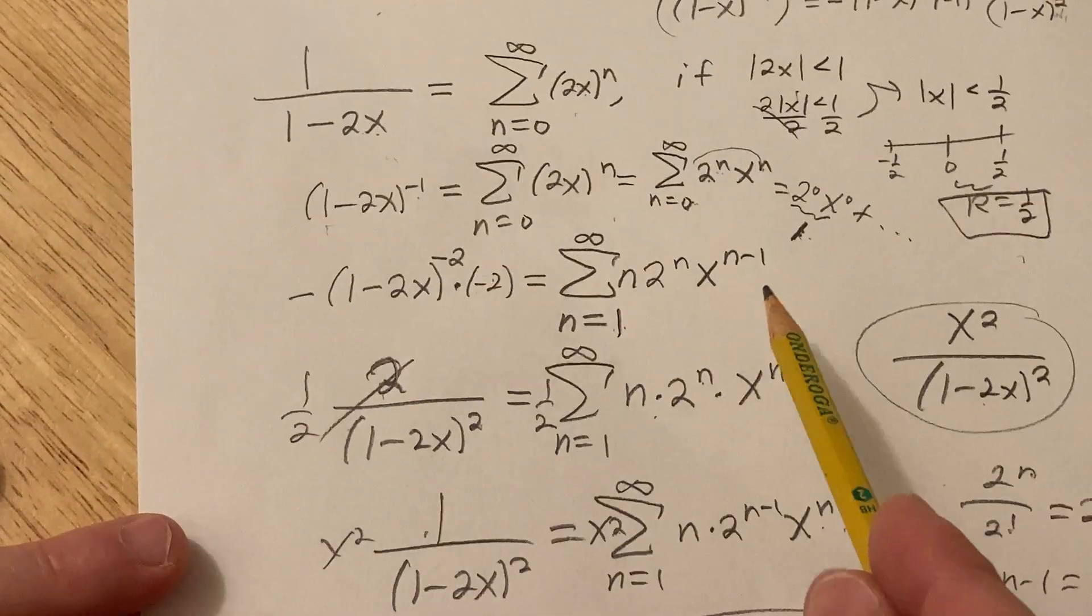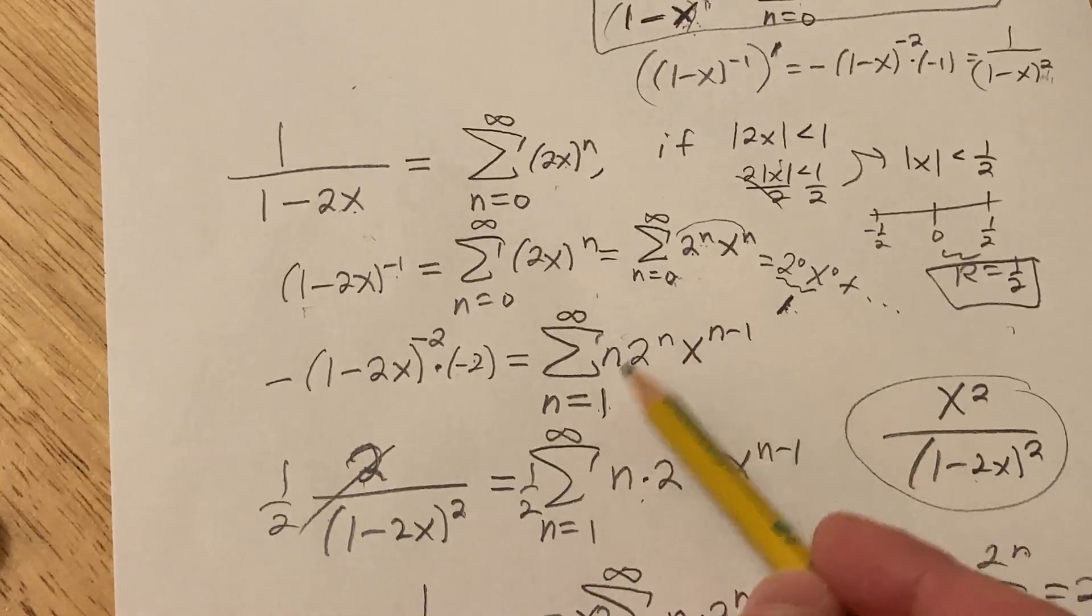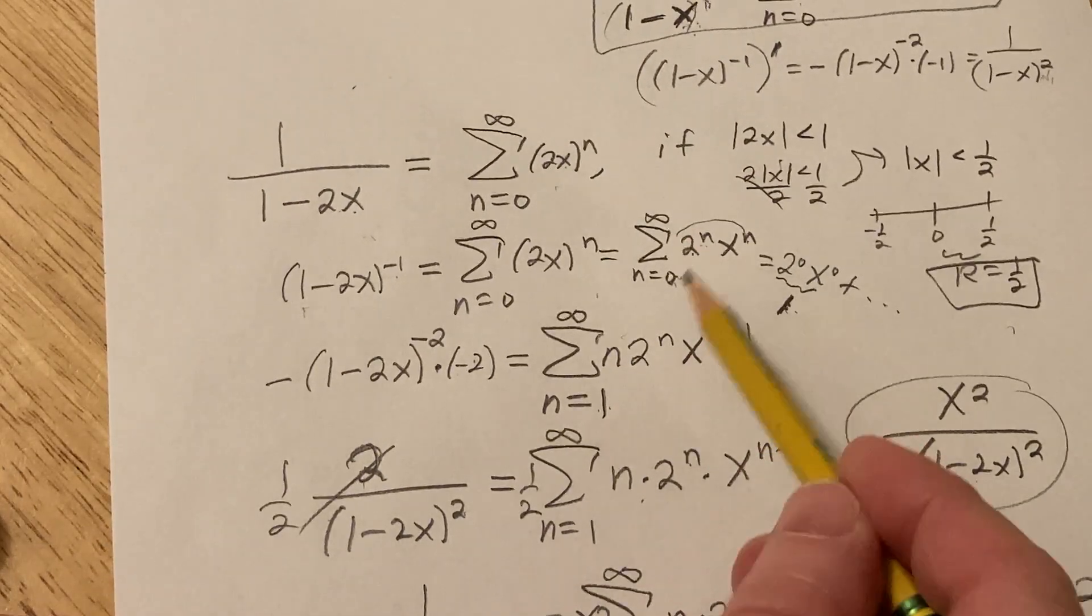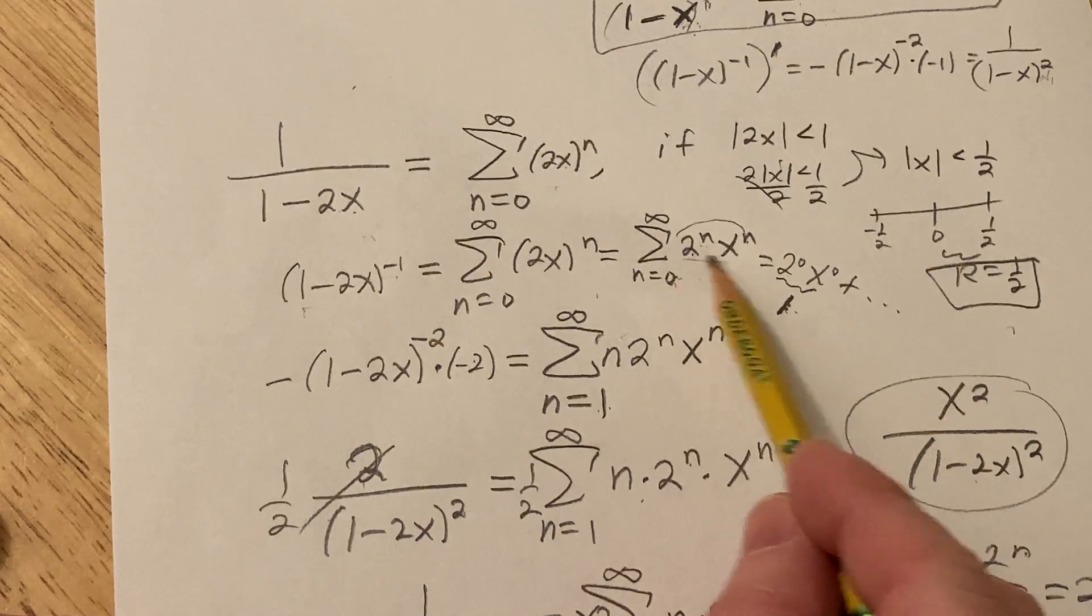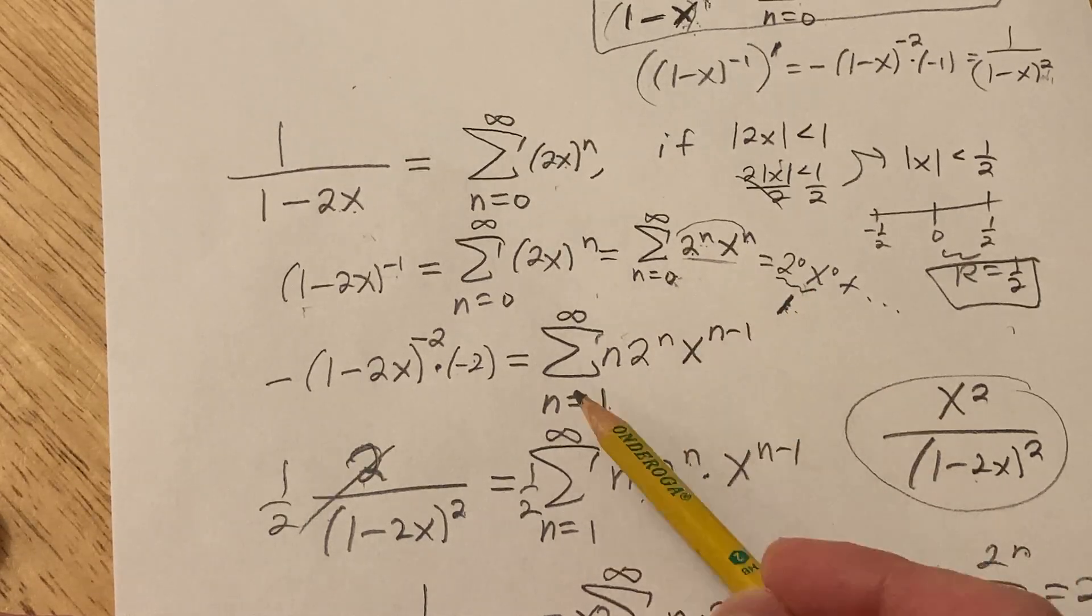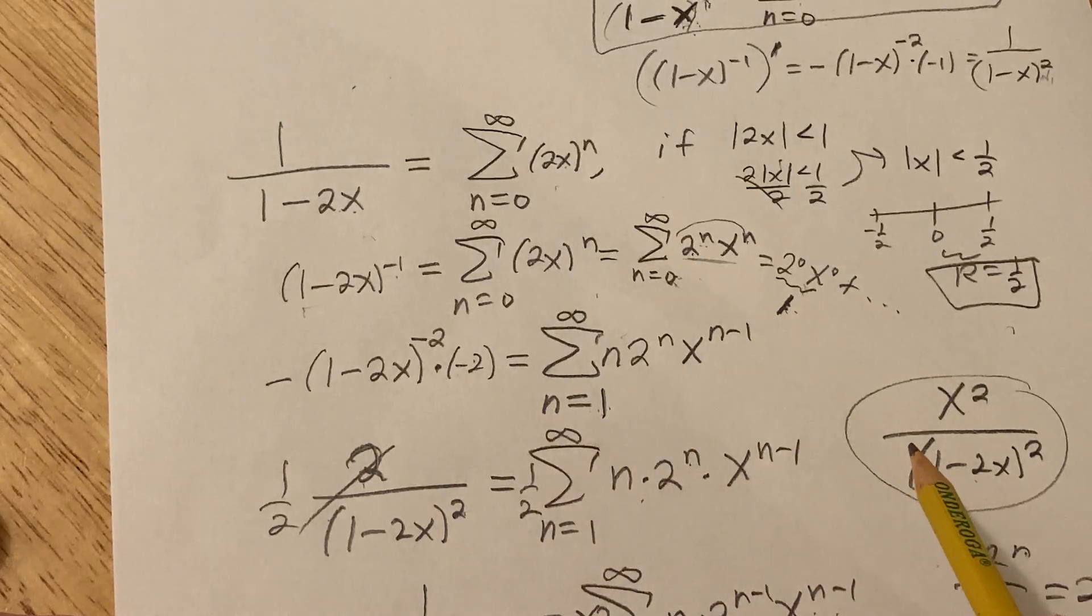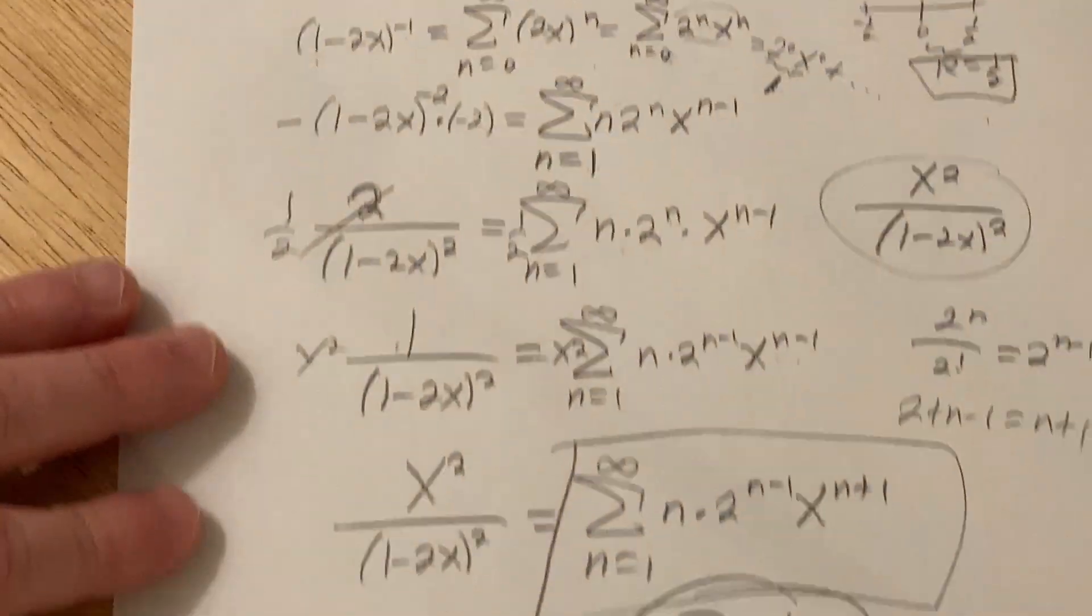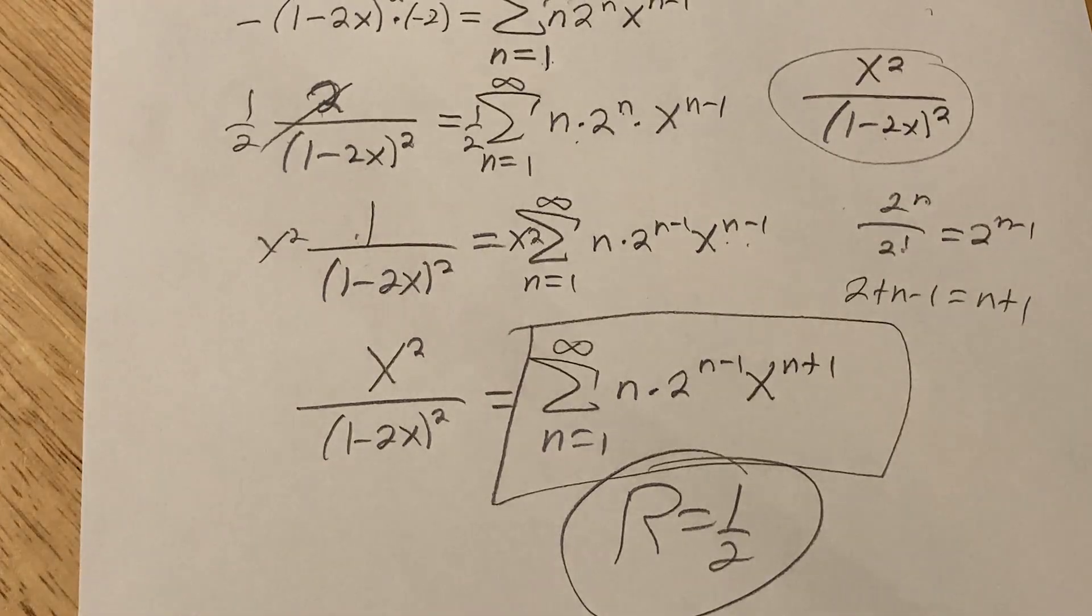And again, here, when you differentiate, this is a really tricky point for people. People struggle with this. The 0th term goes away because it's a constant. Okay. So instead of starting at 0, you start at 1. So yeah, that's it. I hope this video has been helpful to someone out there who is learning series. Good luck.